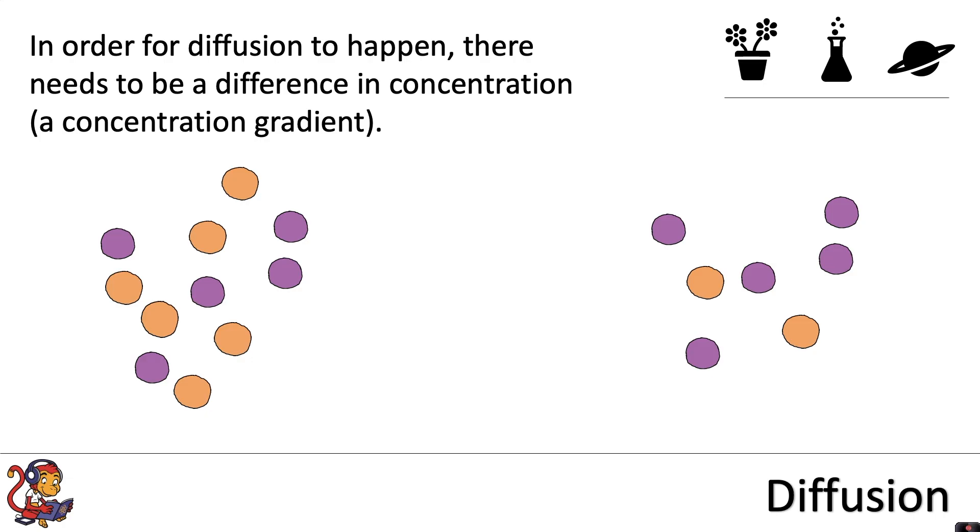So if we compare the particles on the left to those on the right, you can see that in the same volume, there are five purple particles on each side. So for the purple particles, there is no difference in concentration. But for the orange particles, there is a difference in concentration. There are six on the left and only two on the right. So here we have a concentration gradient.